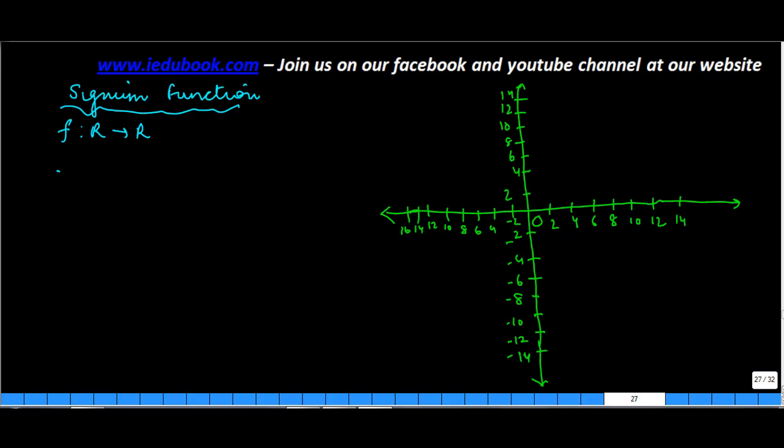a signum function is defined as f(x) is equal to 1 if x is greater than 0. So for all values of x greater than 0, y is equal to 1.